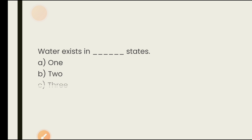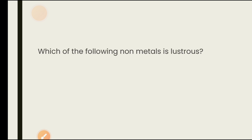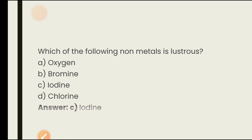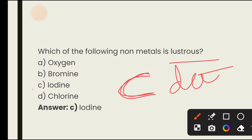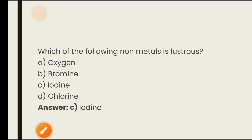Water exists in which state — 1, 2, 3, or all? Water exists in three states: solid (ice), liquid (water), and vapor (steam). Which non-metal is lustrous? Options are oxygen, bromine, iodine, chlorine. Normally non-metals are not shiny, but iodine is an exceptional case — it is the only non-metal that is lustrous. The answer is iodine.